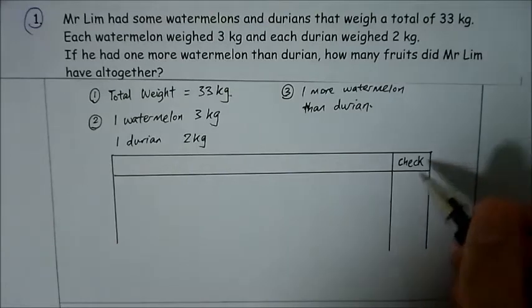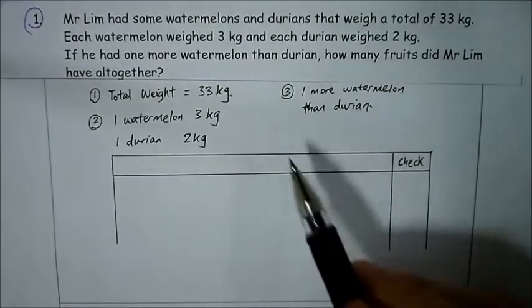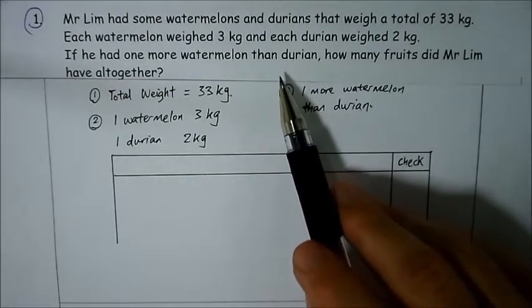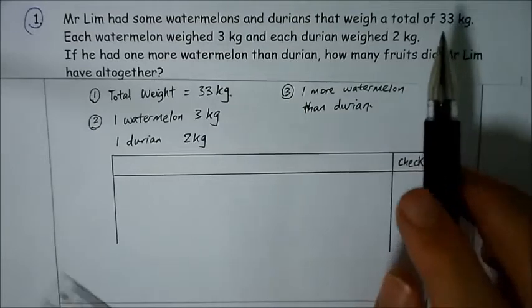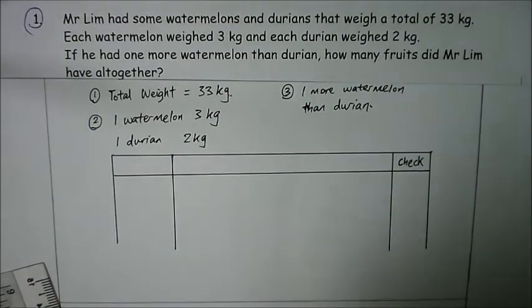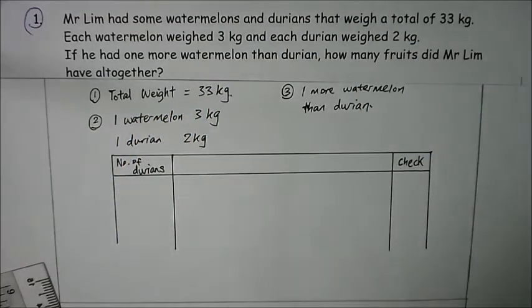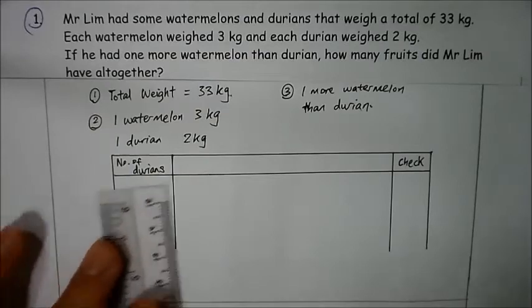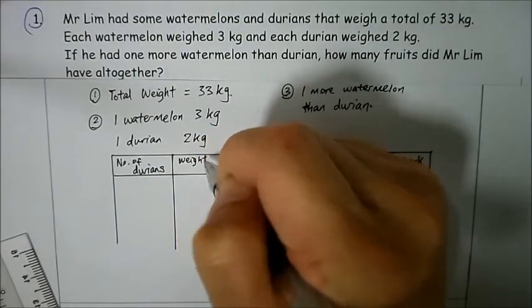This check column is important because we need to verify whether our guess fulfills the two criteria stated in the question. We are given watermelons and durians as well as the total weight of the two fruits altogether. So the first column will be the number of durians. Since one criterion is the total weight, we also need a column for the weight of durians.